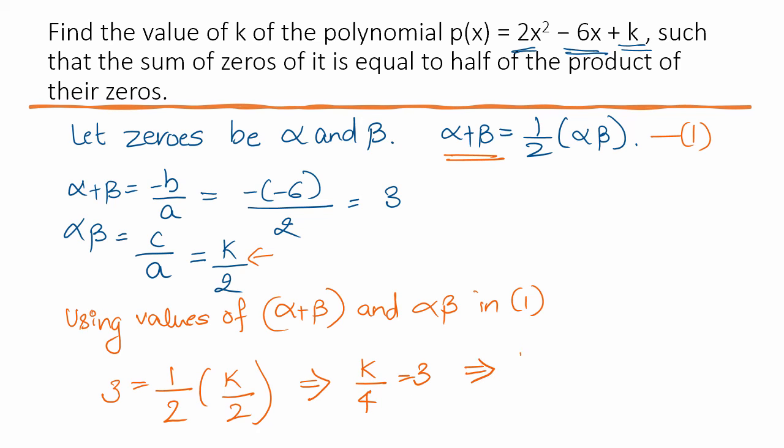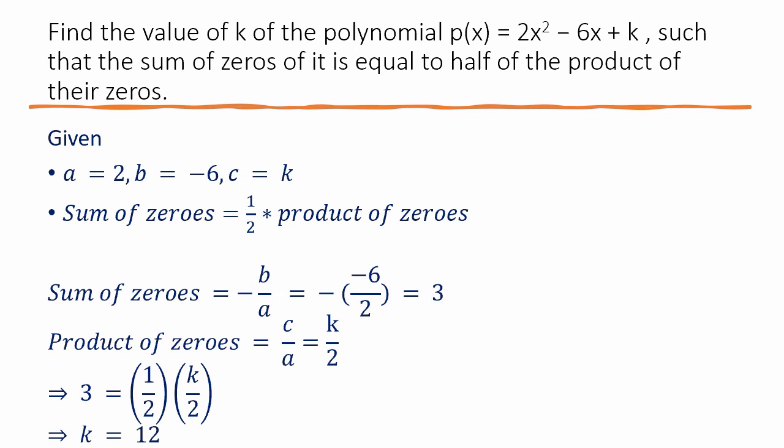So, that's how we solve it. If we see it in a different way, let's look at it again. What they have given is a equals 2, b equals -6, and c equals k. And they have told that sum of zeros is half the product of zeros.